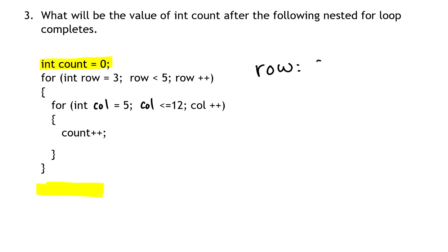we can see that it's going to take on the values three and less than five is the last one, so four. So only three and four. In other words, there will be exactly two times that the outer for loop will execute.